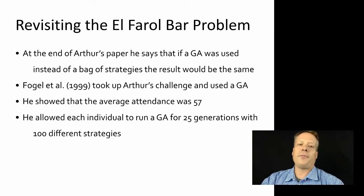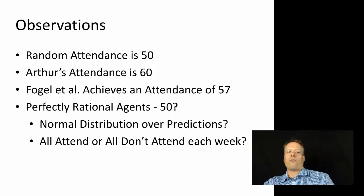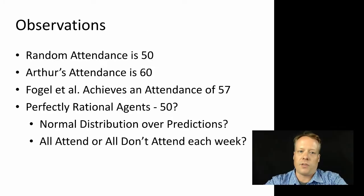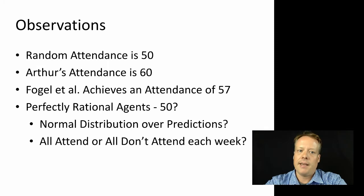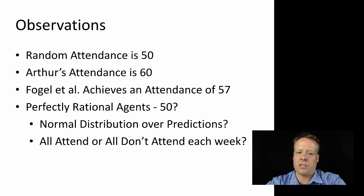As an early postdoc, this made me curious: if random attendance at the bar is 50 — because if you just flip a coin, half the time you attend and half the time you don't — and Arthur's attendance is 60, and the Fogel et al. paper, which seems fairly optimal, achieves an attendance of 57, then what about perfectly rational agents? Maybe they would converge to 50.